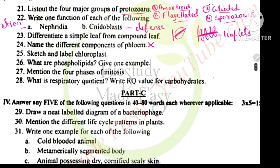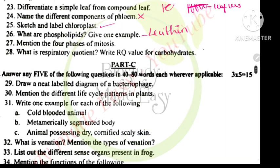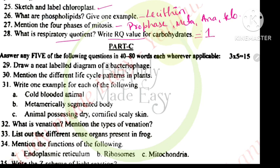Different components of phloem, this is from deleted portion. Diagram of chloroplast. Phospholipids are lipids having the phosphate group attached to them, example lecithin. Four phases of mitosis: prophase, metaphase, anaphase, telophase. Respiratory quotient, the value for carbohydrates is 1. RQ is the volume of carbon dioxide released to volume of oxygen consumed in respiration.